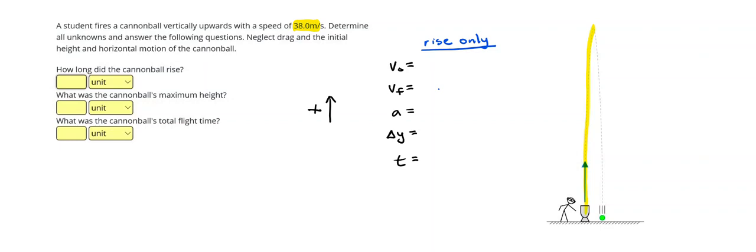So to start off, we've defined our positive direction as upwards. The initial velocity, the launch velocity, is a positive 38.0 meters per second. We also know that as soon as the cannonball leaves the cannon, it's not affected by anything but gravitational force anymore. So this is a free fall problem. And the cannonball's acceleration will be negative 10 meters per second squared. Your teacher might use 9.81.